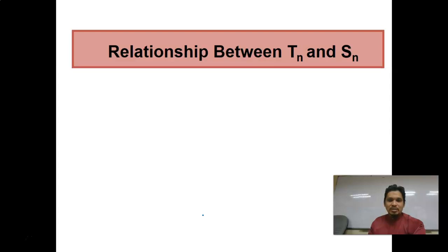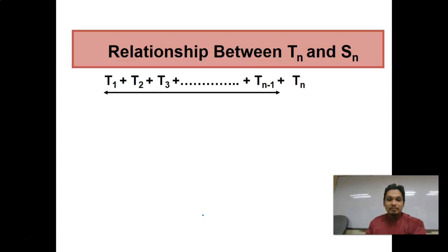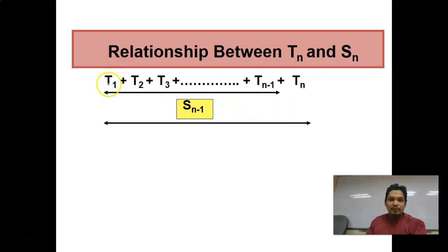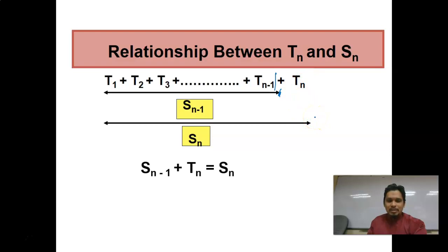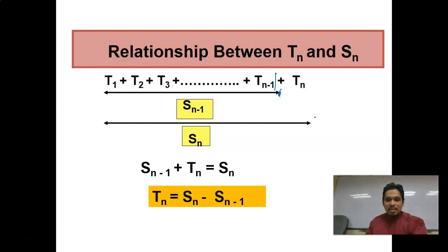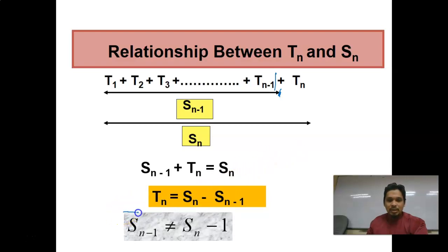The relationship between the nth term and Sn: S(n−1) is the summation from the first term until the (n−1)th term. Since S(n−1) + Tn = Sn, it follows that the nth term Tn = Sn − S(n−1). Please be careful: S(n−1) is not the same as Sn−1.